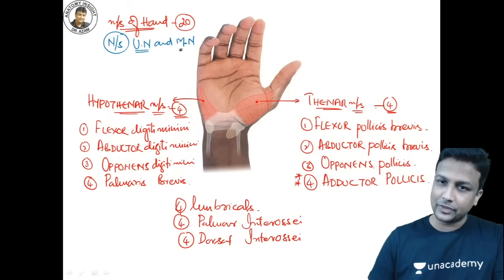What about wrist drop? The posterior compartment of the forearm has extensor muscles that extend the wrist. All extensor muscles are supplied by the radial nerve. If the radial nerve is injured, the extensors are lost and the wrist drops — wrist drop is caused by radial nerve injury. Next: Saturday Night Palsy, also involving the radial nerve.